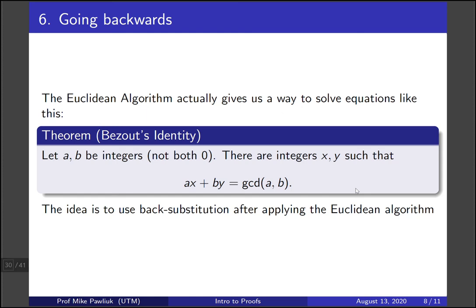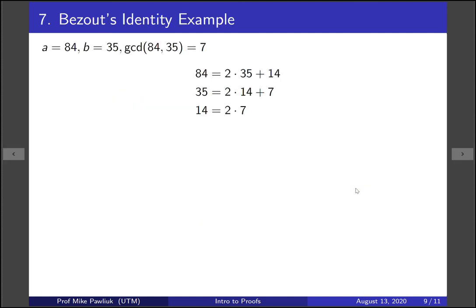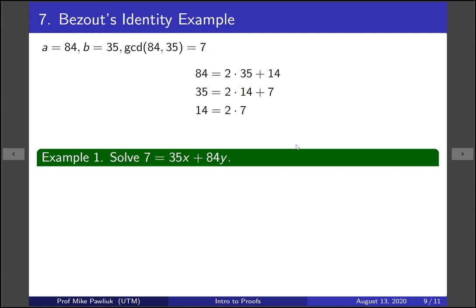Let's look at an example of this. Our example is going to be apply the Euclidean algorithm and then use back substitution. It sounds more complicated than it is. Here was the work that we did for a equals 84 and b equals 35 earlier in these slides. We showed that their GCD was 7 and we did it by applying the Euclidean algorithm. Now let's work backwards. Our goal is to solve this equation: 7 is equal to 35x plus 84y. Now we have one way where 7 shows up in this equation, namely the second one.